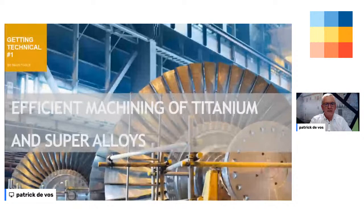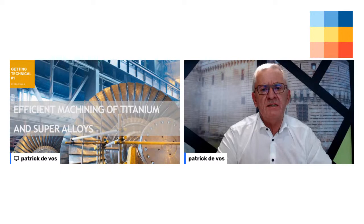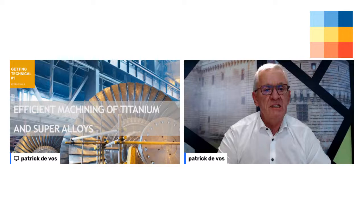Hello and welcome at this first session of Getting Technical. The subject of today is a very interesting one — it's about machining titanium and super alloys. They are very often labeled as very difficult to machine, which is not fair towards these materials. They are different from steel, but if you understand the materials and know the properties that influence the machining process, we can see that it's not really so difficult to machine titanium and super alloys.